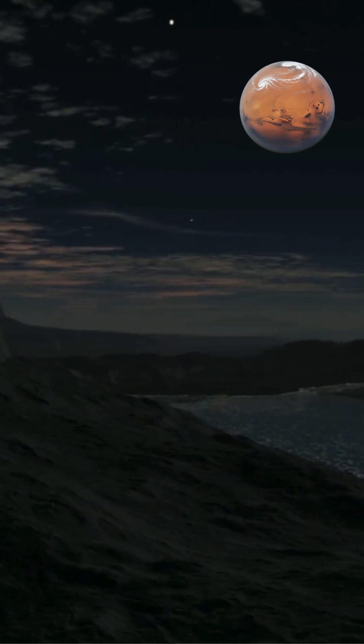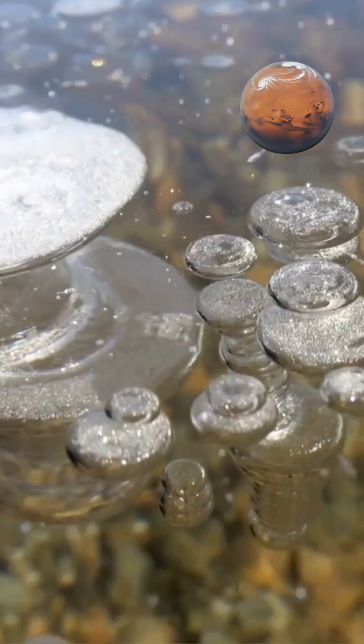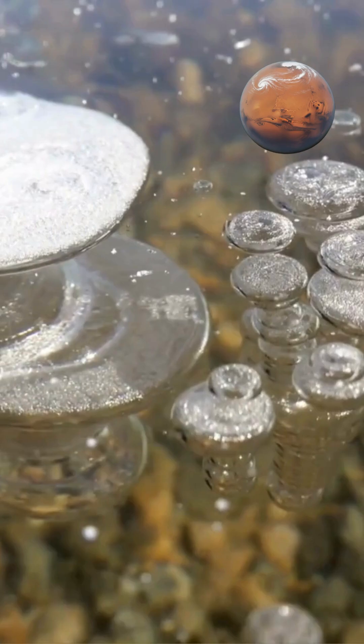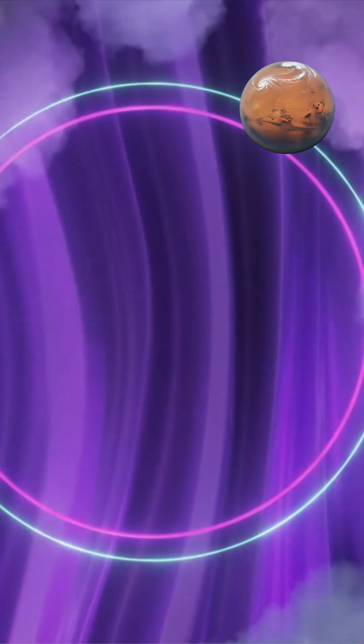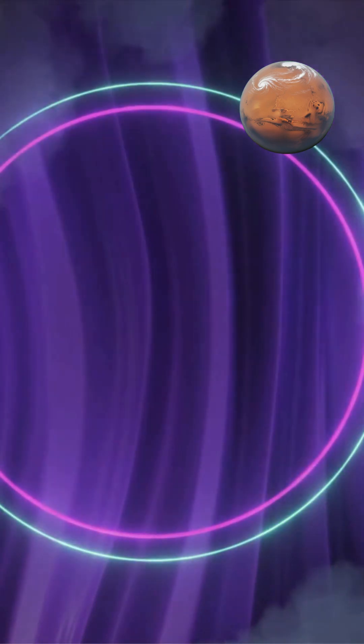The hot gas rising from deep within the atmosphere meets cold, cooled gas falling from the upper layers, generating powerful storm systems. Neptune's atmospheric structure also contributes to storm formation.